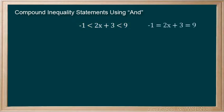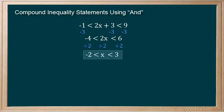You wouldn't see this with equations as you can't have two equal signs in the same equation. Subtract 3 from all parts separated by inequality signs. Divide 2 in the same manner to get this statement, which we describe as x is greater than negative 2 and x is less than 3.